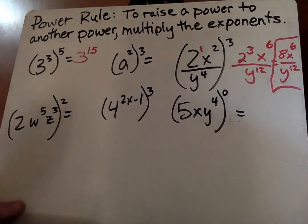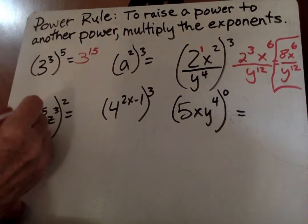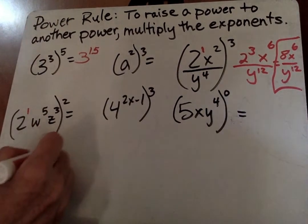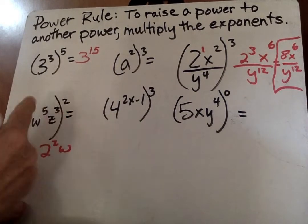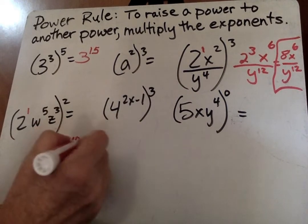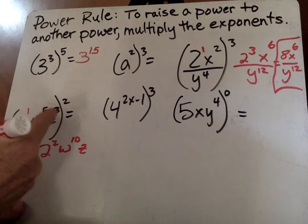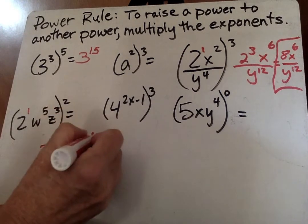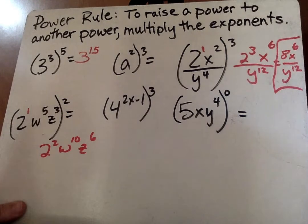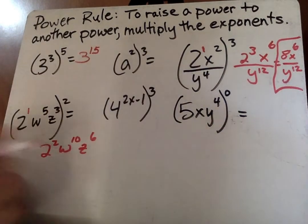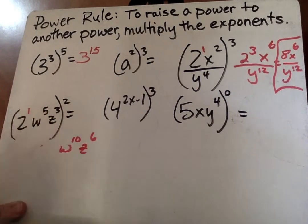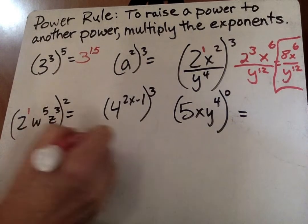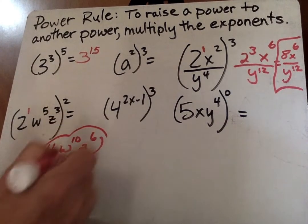Next, I'm going on to this one here. Again, 2 to the first power is 2. 1 times 2 is 2. 5 times 2 is 10. And 3 times 2 is 6. And 2 squared here, I can just change that to a 4. And it's simplified and you're done at that point.